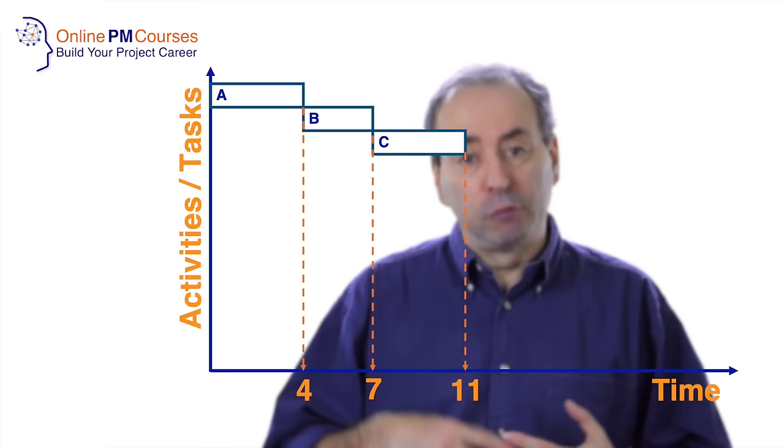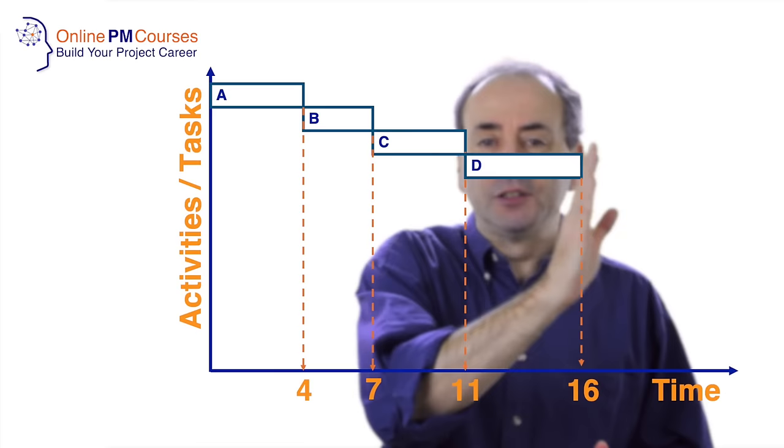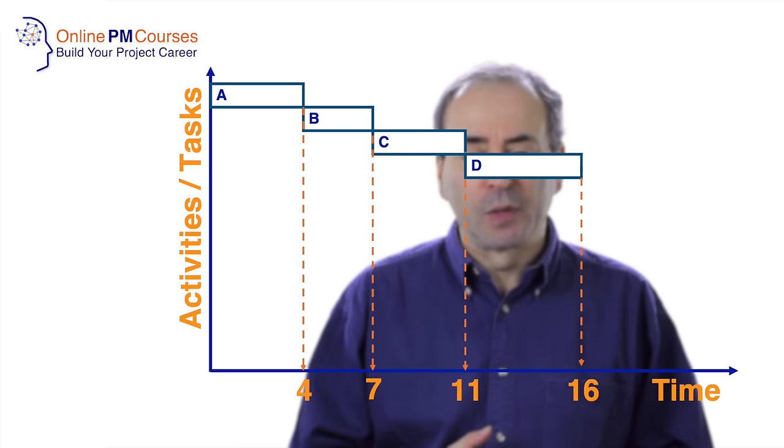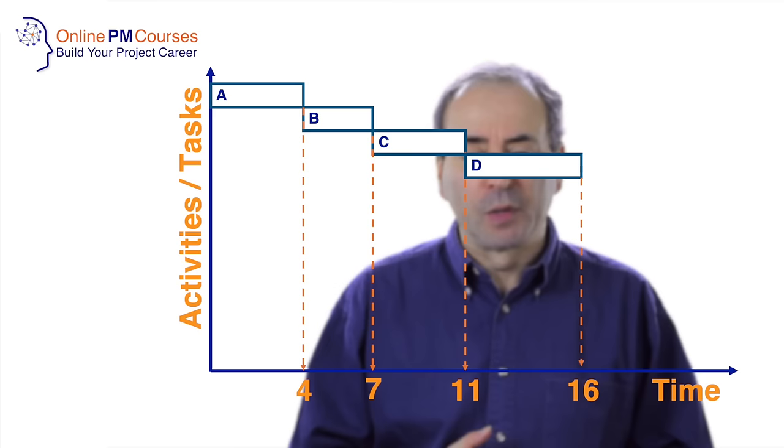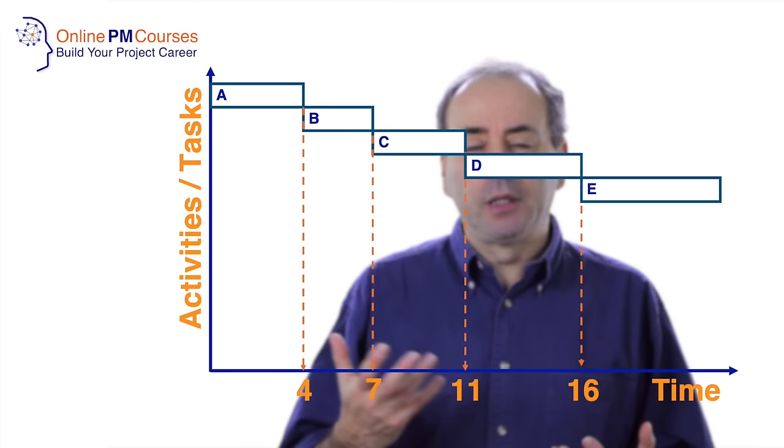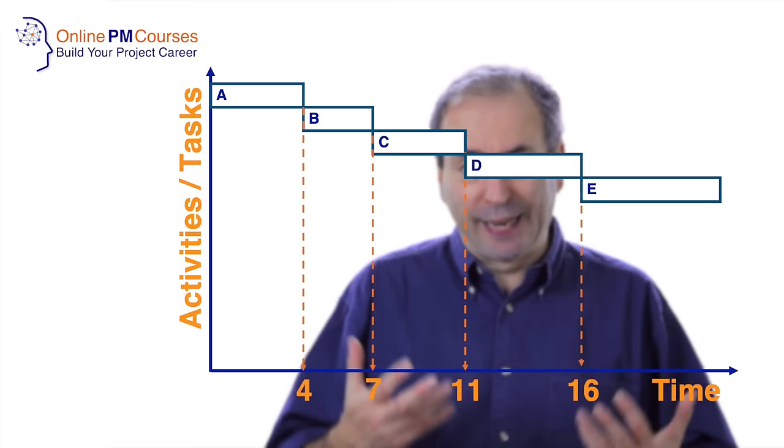So if one task follows another, then the bar follows the previous bar. And so what we often see on our Gantt charts are these long diagonals of one activity following another in time, because each task is dependent upon the completion of the predecessor task to get started. But then we might have other work streams that run in parallel.